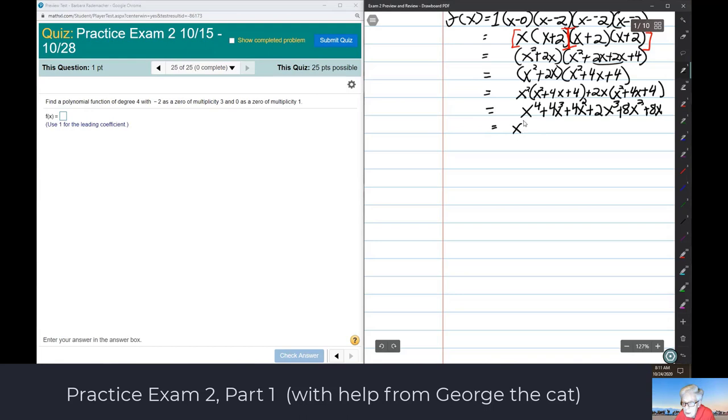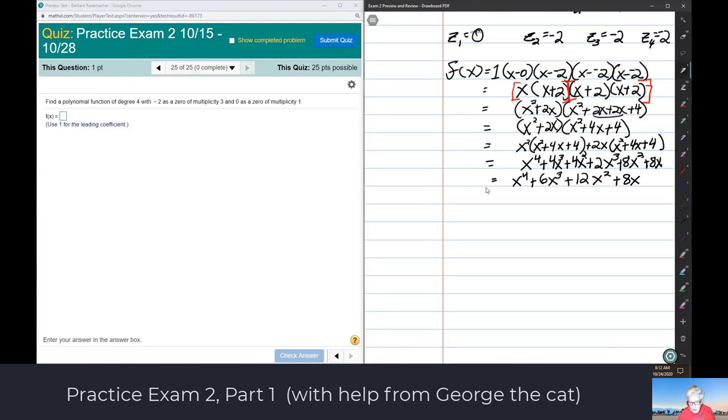And so, now I distribute x squared times x squared is x to the fourth. x squared times plus four x is plus four x to the third. And x squared times plus four is plus four x squared. And then over here, we've got two x times x squared. That's two x to the third. And two x times plus four x will be plus eight x squared. And plus two x times plus four is plus eight x. And then I combine my like terms and I'll be done. So, I will have x to the fourth. Now, I should have two cubed terms. And there I've got four x to the third plus two x to the third. That will be plus six x to the third. And then four x squared plus eight x squared will be plus twelve x squared. And then plus eight x.